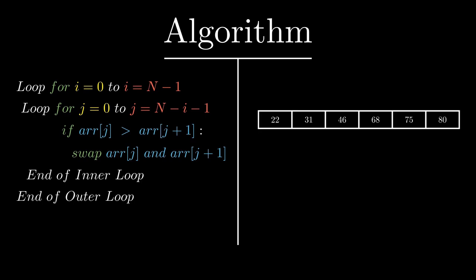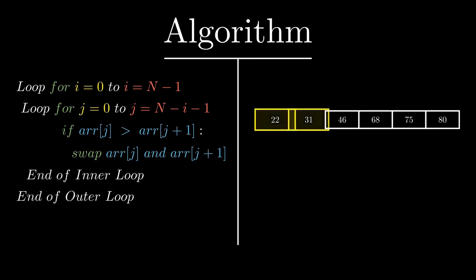For pass 4, the value of i will be 3 and the inner loop will go from 0 up to 2. We compare 22 and 31 — it is already sorted, so we don't swap. Then we compare 31 and 46 — also sorted, so we leave it. For the final pass, the value of i will be 4 and the range of j will go from 0 up to 1. As you can see, 22 and 31 are already sorted. We are done with our outer loop and the array is now sorted in ascending order.